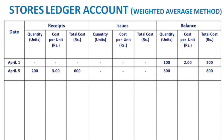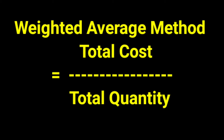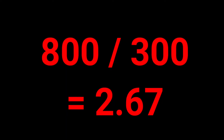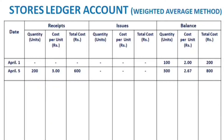The cost per unit is calculated as total cost divided by total quantity: 800 divided by 300 equals 2.67 rupees. So the weighted average price after April 5th is 2.67 rupees per unit, with a balance of 300 units.